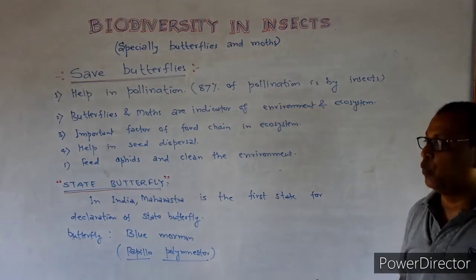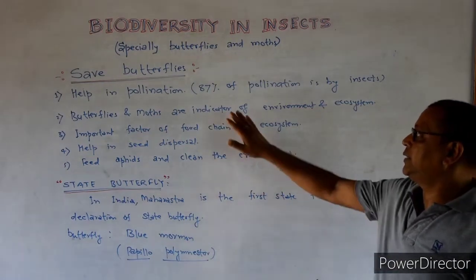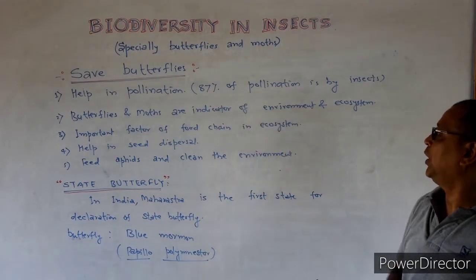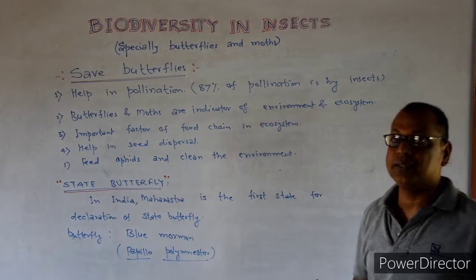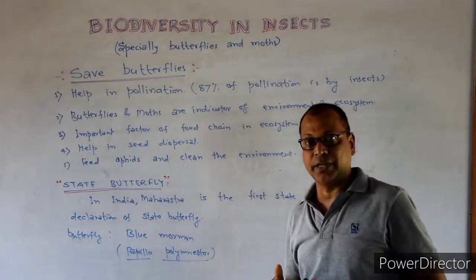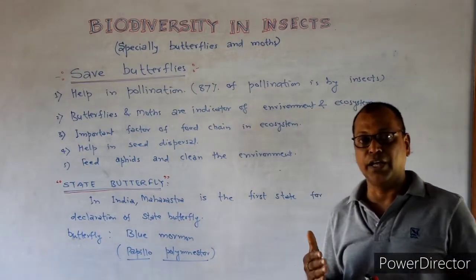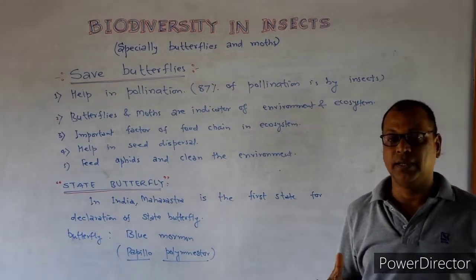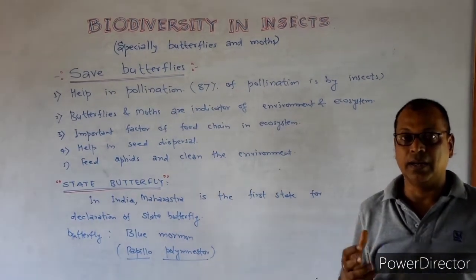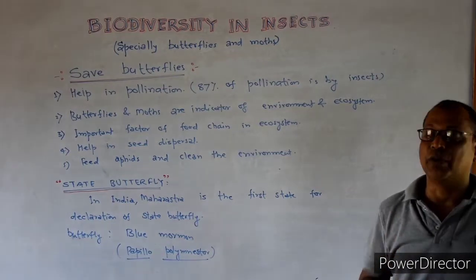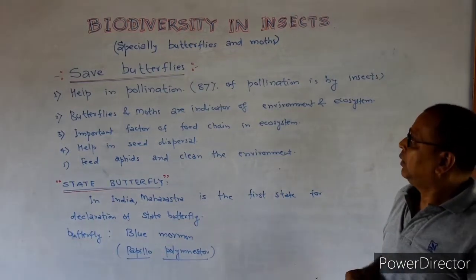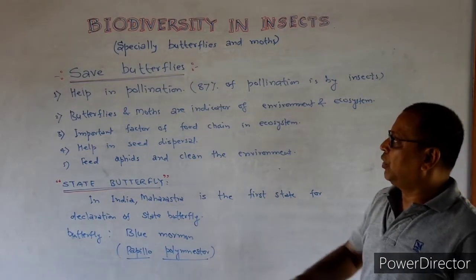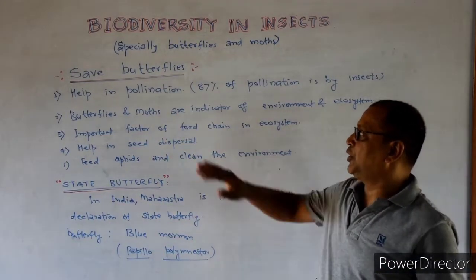87% of the pollination is done by insects. After the honeybee, butterflies are a very important agent of pollination.